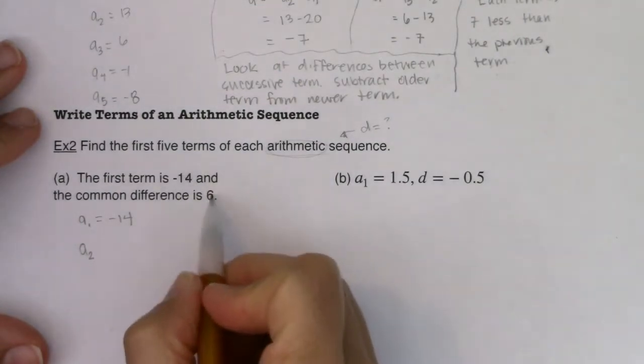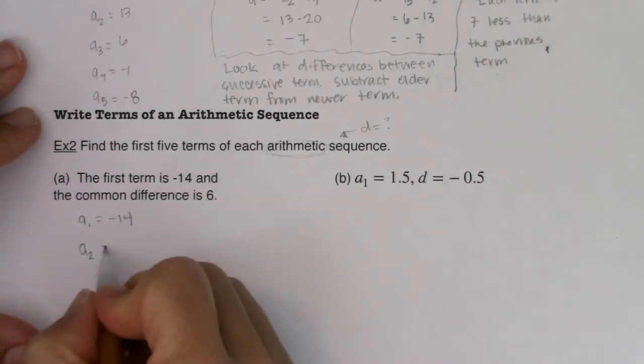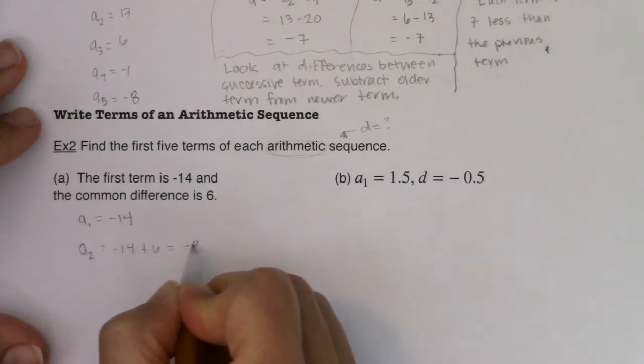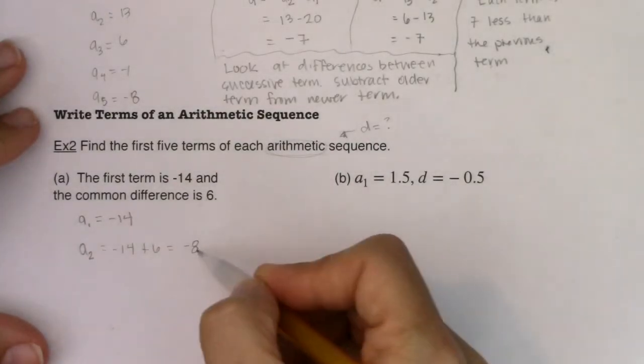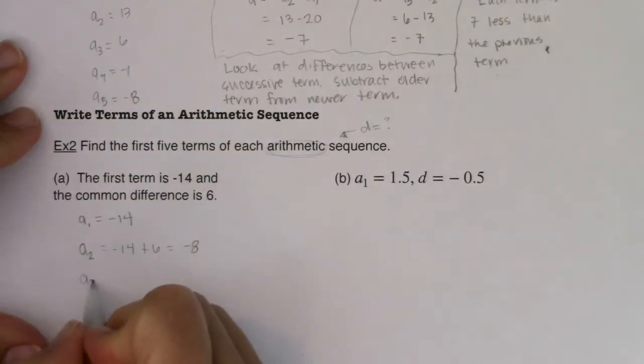And just take note that since D is positive, my number should get larger. So I will take negative 14 and add six to it. So in this case, A sub two is negative eight. I'm going to add that common difference. And when you're adding a positive number, the terms in these sequences will get larger and larger.